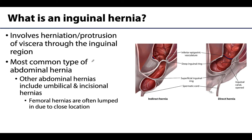An inguinal hernia is the most common type of hernia in the abdominal region. Other types of abdominal hernias include umbilical hernias, which involve the umbilical region, incisional hernias caused by a surgical incision, and femoral hernias, which are often considered in the abdominal region as they are near but inferior to the inguinal region. Inguinal hernias remain the most common.